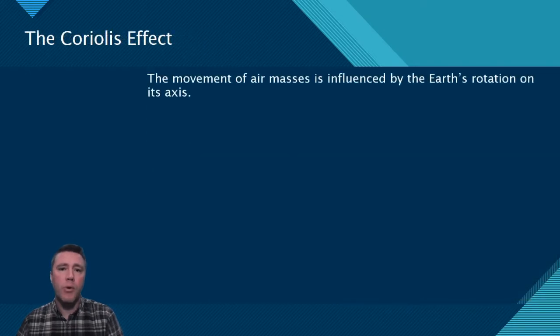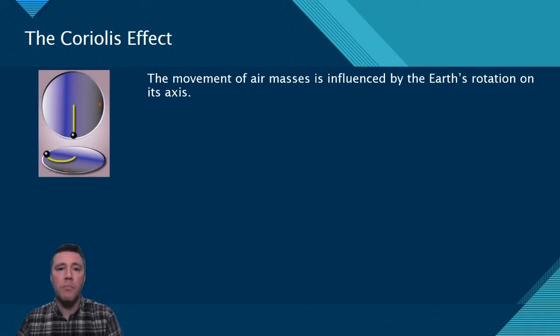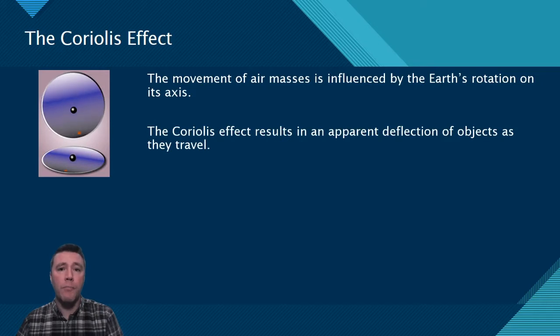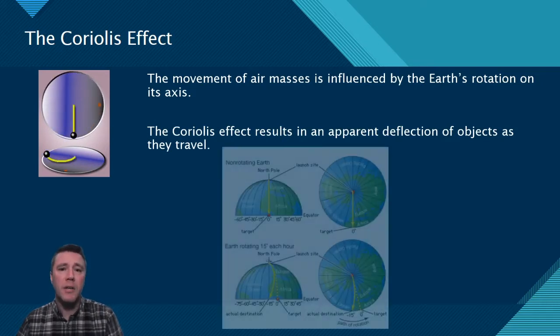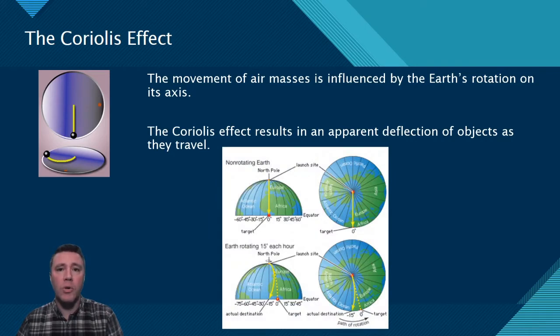Since Earth rotates on its axis, that rotation influences the movement of masses of air. The surface of the Earth moves beneath the air that seemingly hovers above it. The Coriolis effect results in a deflection of objects as they travel over a rotating surface.